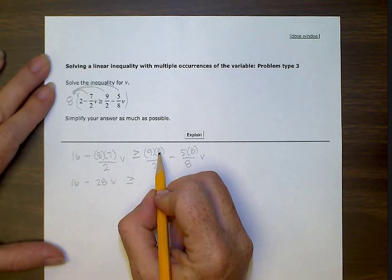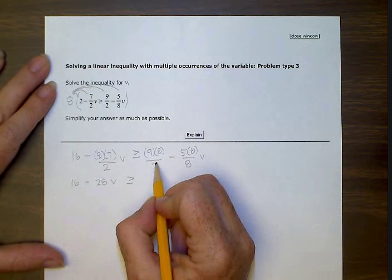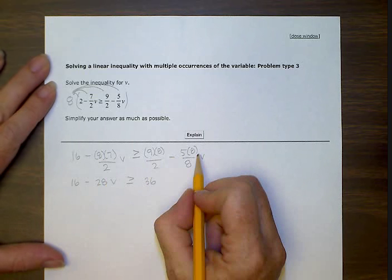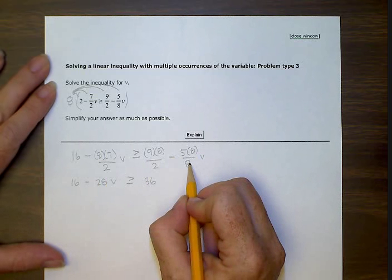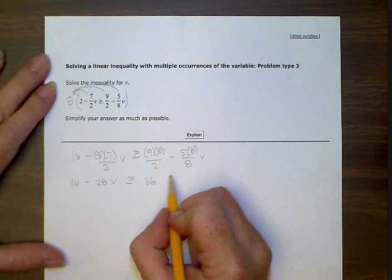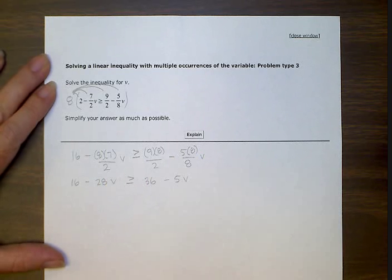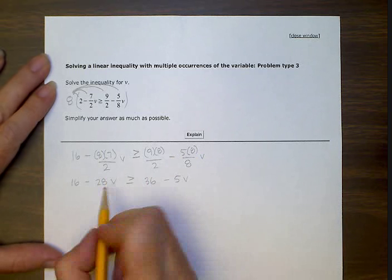9 times... oh, let's first do 8 divided by 2 is 4, 4 times 9 gives us 36. And then this 8 reduces with this 8 to equal 1, so we have just a negative 5v.